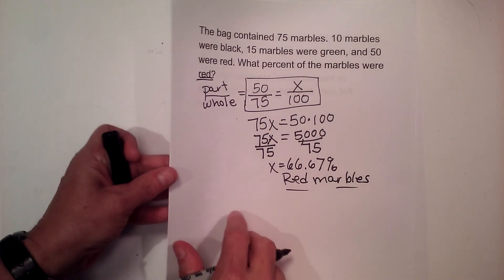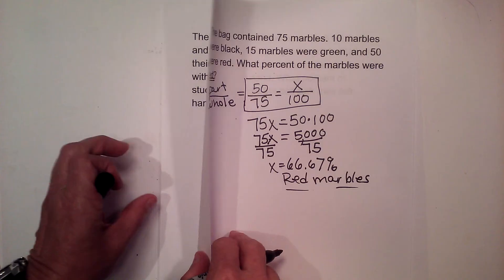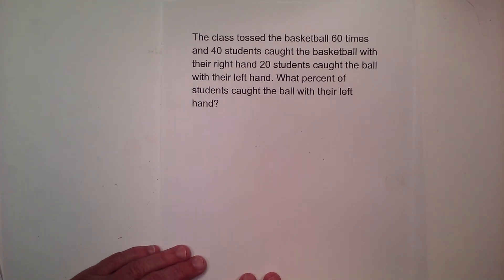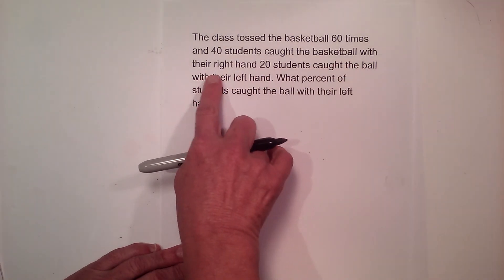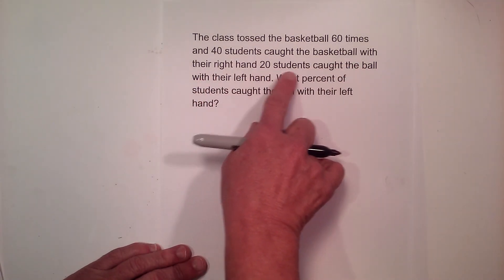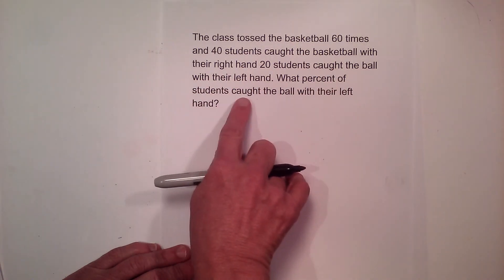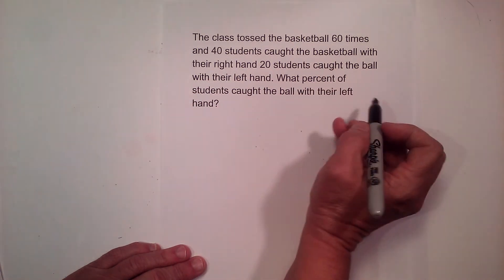Let's look at the third one. The class tosses the basketball 60 times. 40 students caught the basketball with their right hand and 20 students caught the ball with their left hand. What percent caught the ball with their left hand?